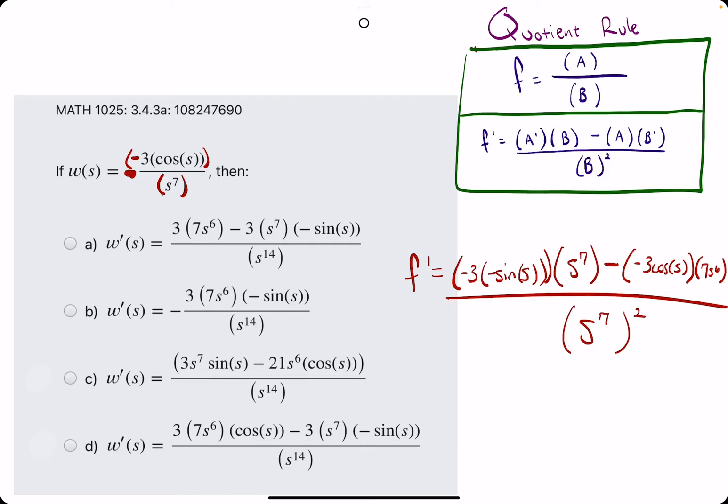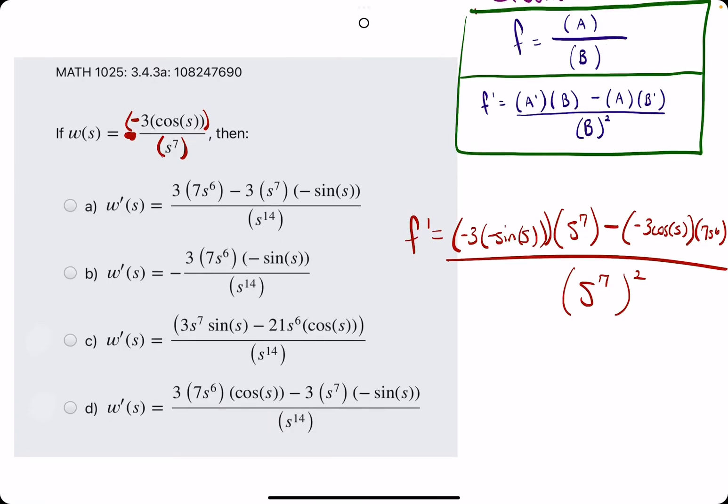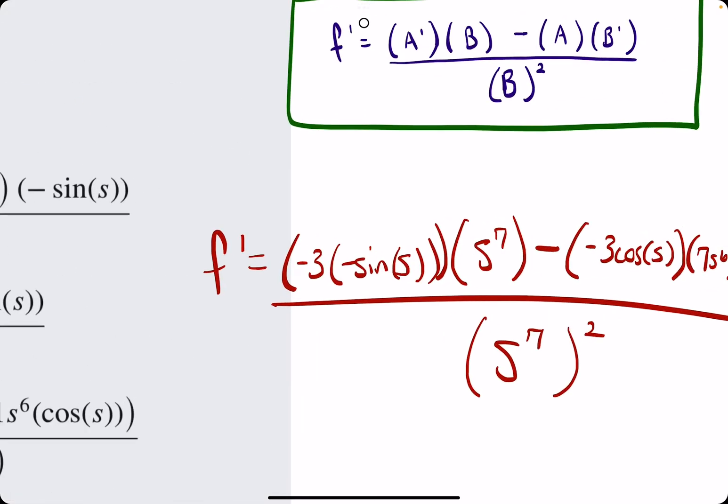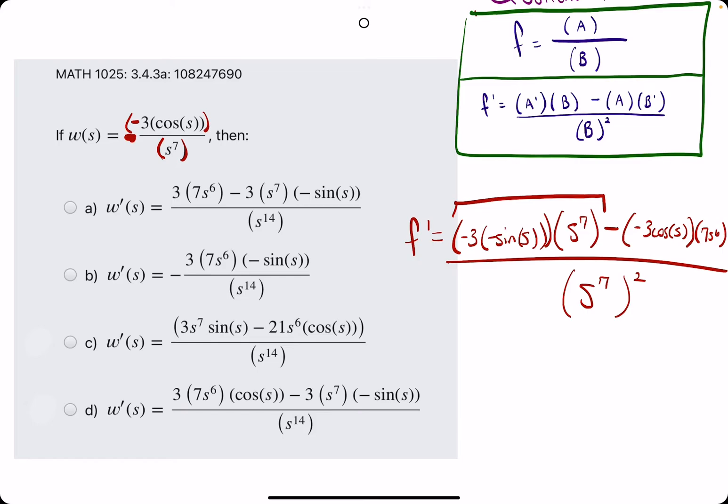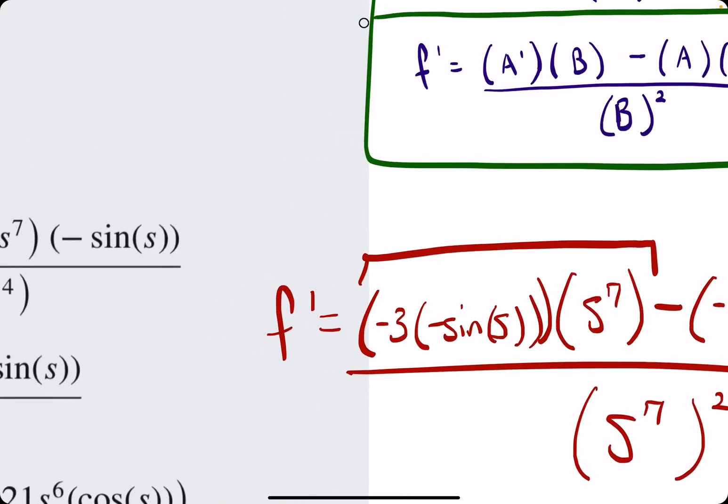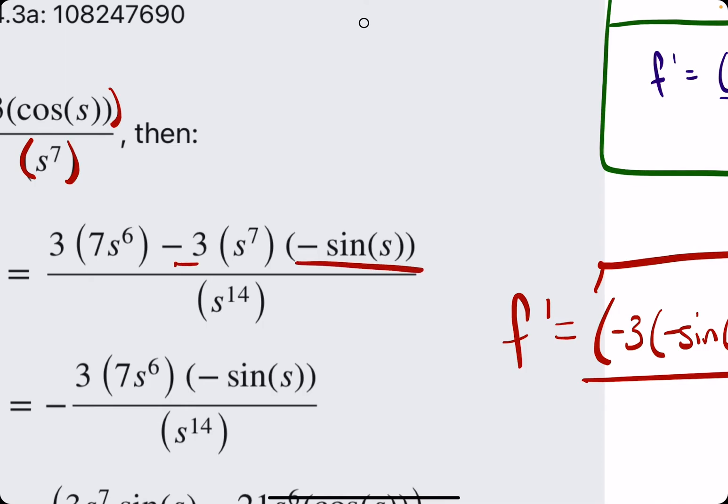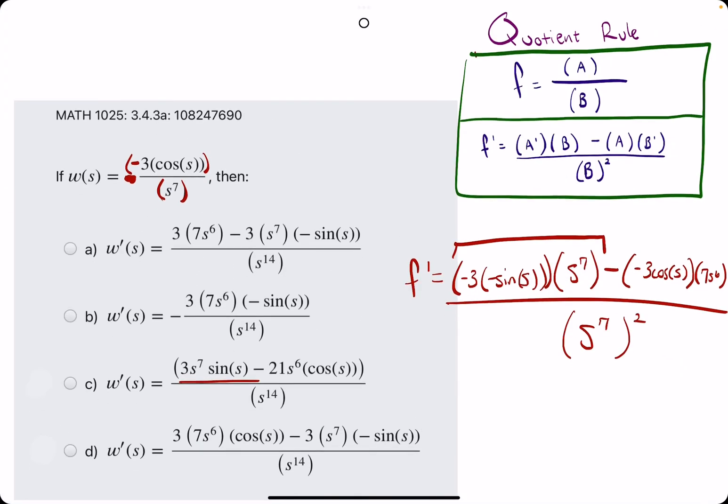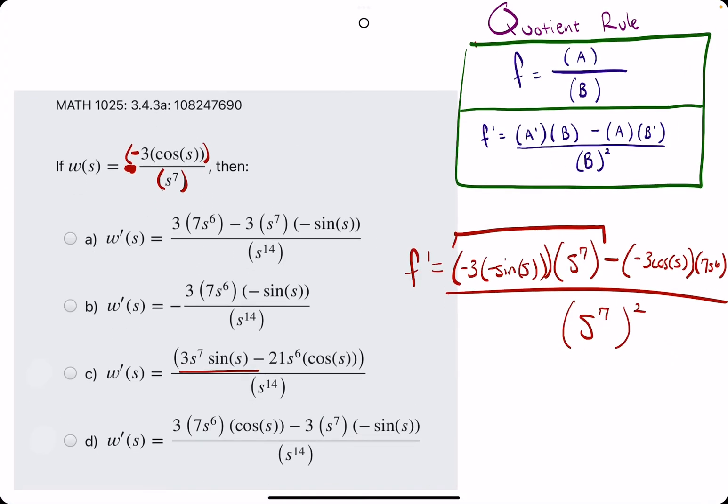And then we want to divide by S to the 7th squared, or B squared. So now we want to see S to the 7th squared on the bottom. And all of them do have S to the 14th. No help there. Again, we want to see these two terms paired together, a negative 3, negative sine, and S to the 7th. Even if they're not right out in front, we may still see a negative 3, negative sine, S to the 7th in our answer. As long as the signs are still correct, they can be on the right side of the numerator.